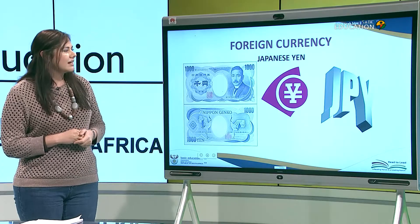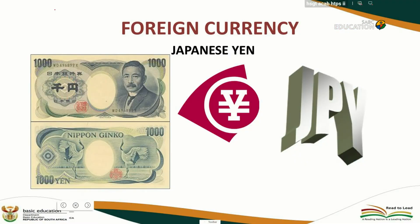For the Japanese yen, the symbol is a Y with two lines through it, and the code is JPY.